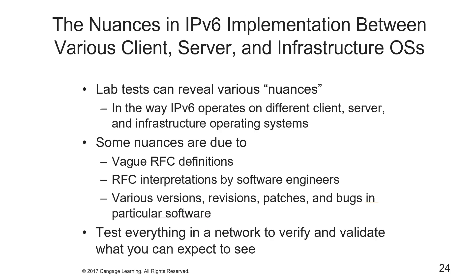Some of the nuances in v6 implementation across various client, server, and infrastructure operating systems can be revealed through lab tests. Some nuances are due to RFC definitions not being stringent, some are due to various RFC interpretations by software engineers, and some are due to various versions, revisions, patches, and bugs in software. While different operating systems behave differently with regard to v6, operations are generally valid, but the only way to verify and validate what you can expect is to test everything thoroughly.